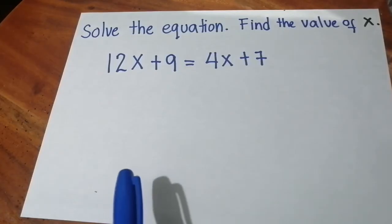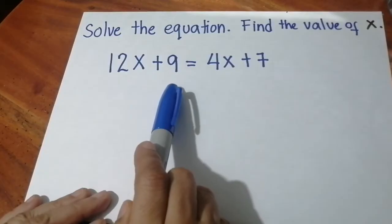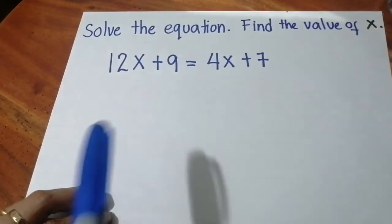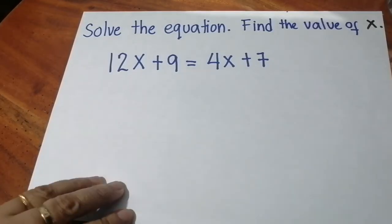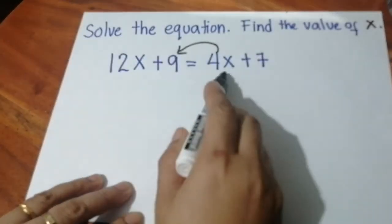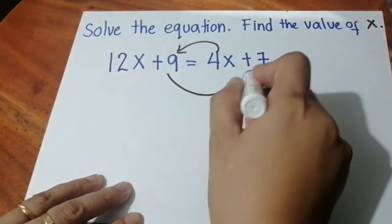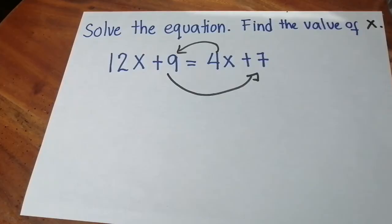Kailangan magkapareho lahat ng mga may x sa kabilang side at yung lahat ng numbers lang ay sa kabilang side. To do that, we need to use transposition. Transpose 4x to the other side and transpose 9 to the other side. That's the technique there.